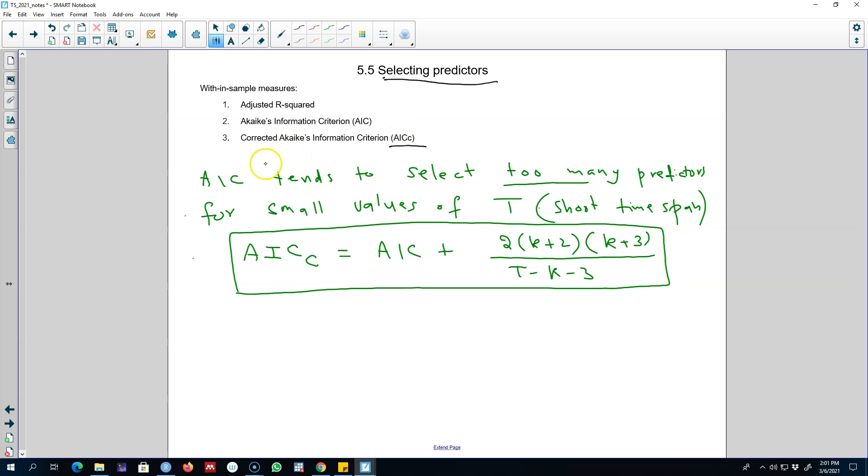So the problem with the AIC that I talked about previously is that if our time span is too short, that is our data set is not long enough, then AIC tends to select too many predictors. For example, we may have 10 potential predictors and AIC may select five of them as our best predictors.